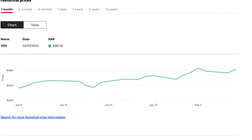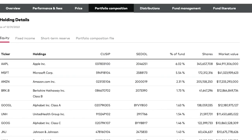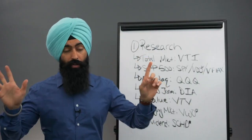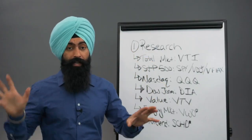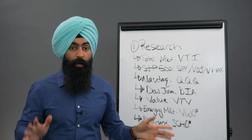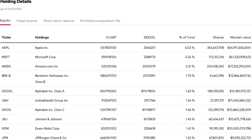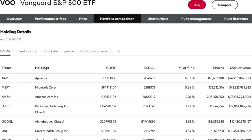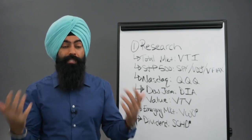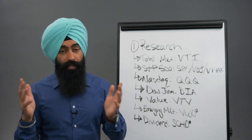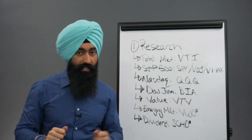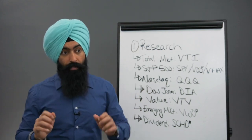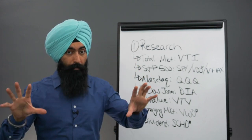SPY and VOO are created by different investment institutions, but they invest in the same 500 companies generally. The difference is that SPY and VOO will have a slight difference in asset allocation — meaning they value some companies more than others. Both ETFs create funds of 500 different companies and allocate their money based on what they think is best. VOO and SPY have some slight differences — like they value Tesla a little bit differently, or Johnson & Johnson a little bit differently — but besides that, they work primarily the same way.